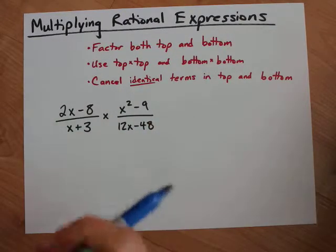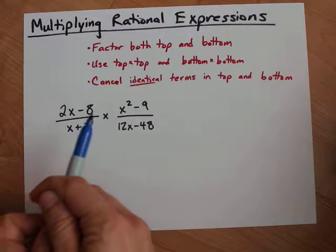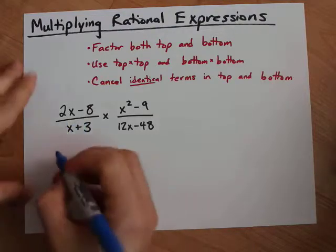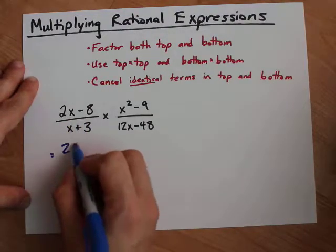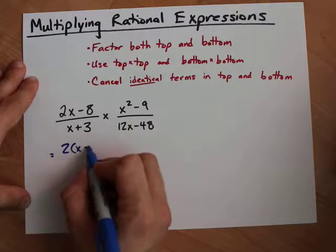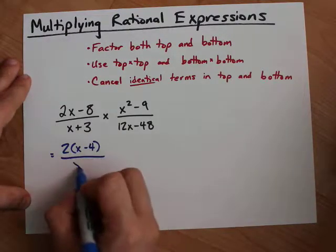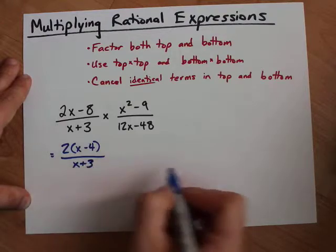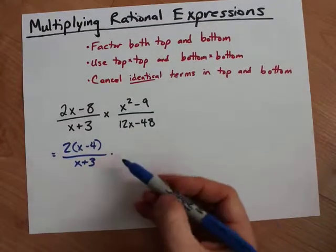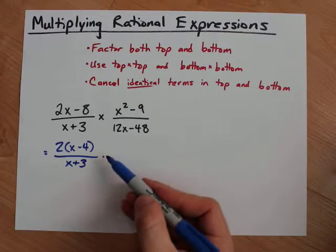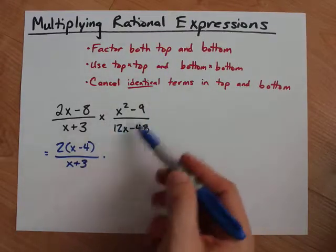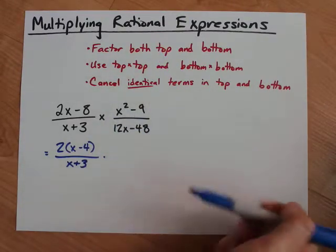First, we've got to factor both the top and bottom in this first expression. I can pull two out of both of those. That's called common factoring, and I'm left with x-4 once I do. The x+3 can't be factored further, so I leave it as x+3. I like using dots for multiplication in rational expressions because I don't want to get confused with my x's, but that's just me.